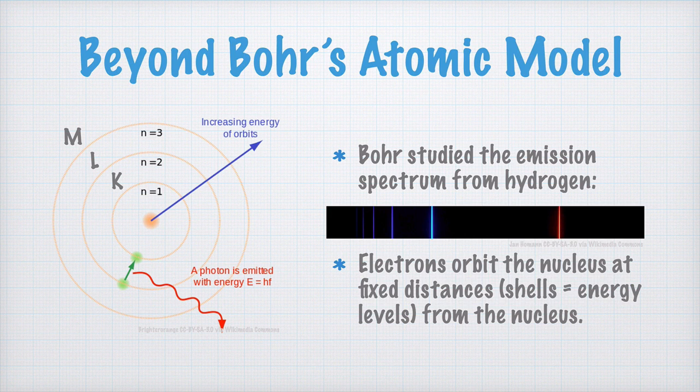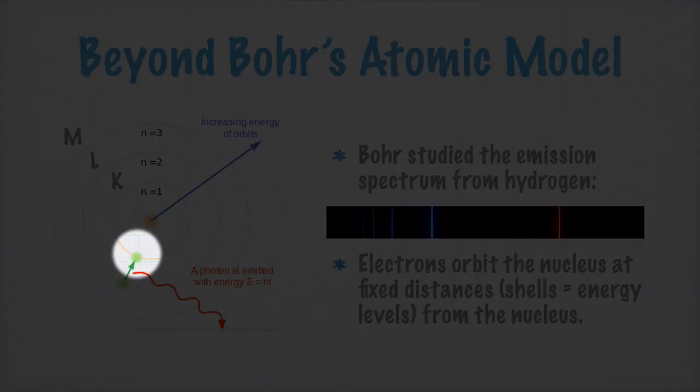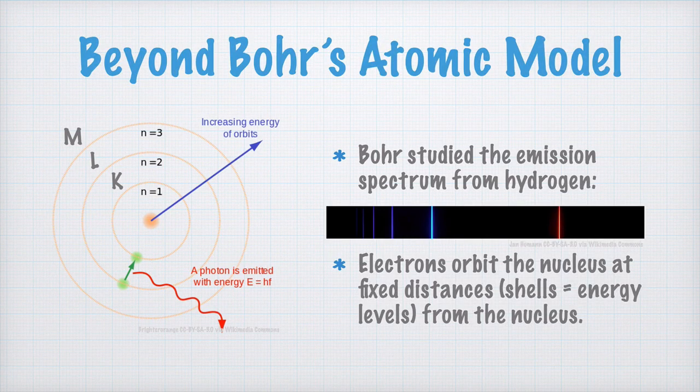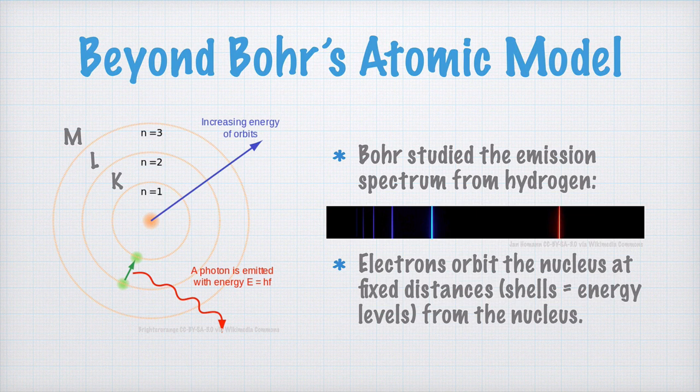Bohr's atomic model essentially describes the hydrogen atom, that the electrons move around the nucleus in shells or at different energy levels. We call these shells the K-shell, the L-shell, the M-shell and so on. But for larger atoms with higher atomic numbers, the electron's behavior is more complex and we must use other models.